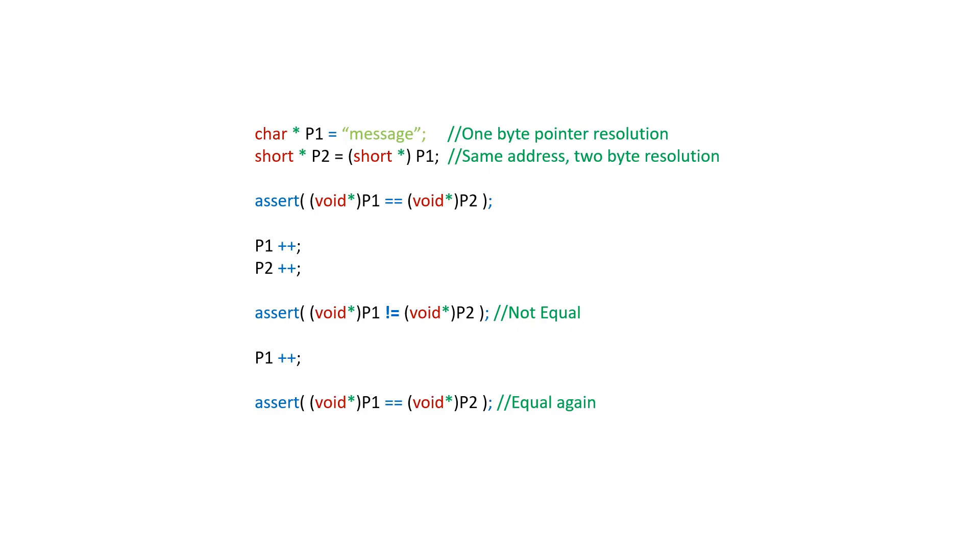We can compare the pointers and see that they are the same. Upon incrementing them, they become different until we increment the smaller pointer again. So the math we perform on the pointer is relative to the size of the type of the pointer.